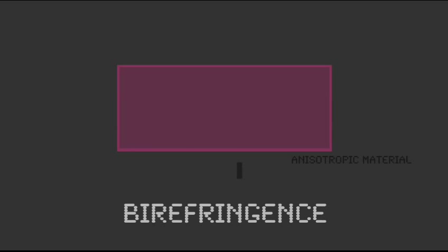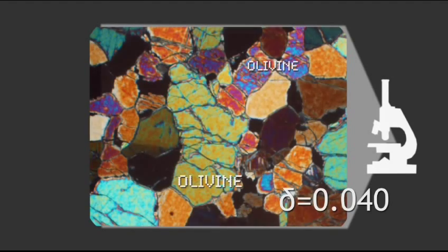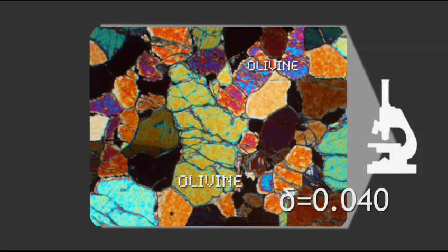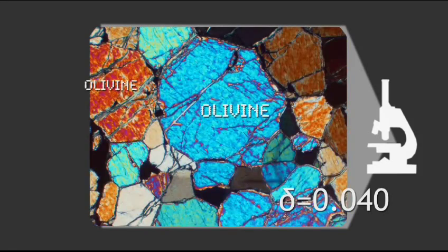Birefringence is the splitting of a single ray of light into two rays when it travels through an anisotropic material. Birefringence is a diagnostic property. The mineral olivine has high birefringence.